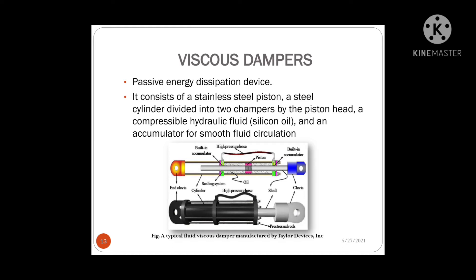Thank you. Moving forward, the device that we have applied to our structure is a fluid viscous damper. Fluid viscous dampers are passive energy dissipating devices which are added to the structure to increase the stiffness of new and existing buildings. Viscous dampers work based on the principle of dissipation of energy due to fluid flowing through an orifice. The damper consists of a stainless steel piston, a steel cylinder divided into two chambers by the piston head, a compressible hydraulic fluid, and an accumulator for smooth fluid circulation.